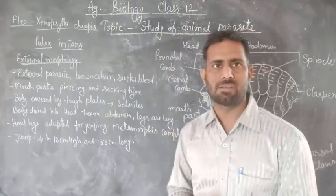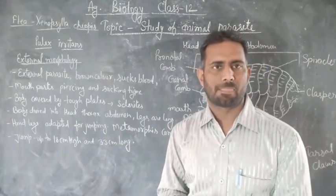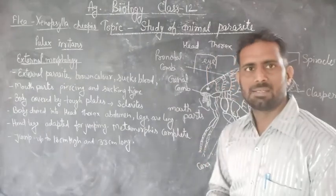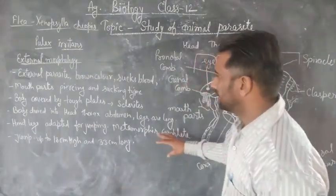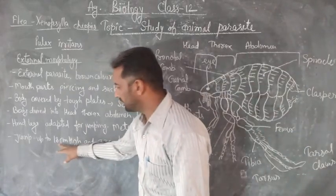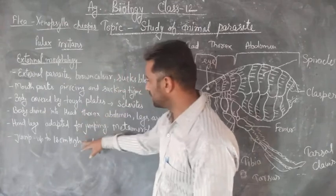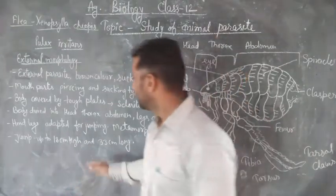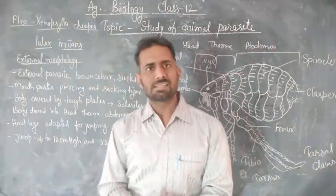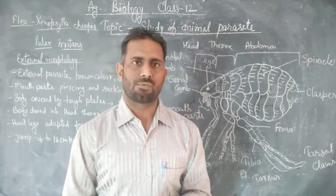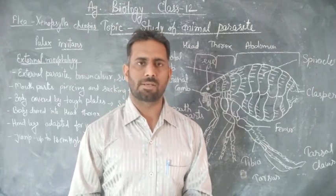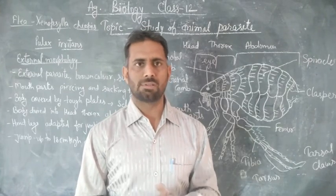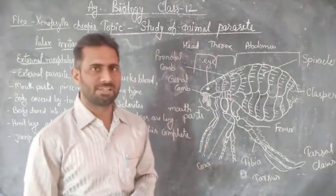The body size is approximately 3 to 5 mm, and it can jump 50 times its body size using its hind legs — up to 18 cm in height and 33 cm in length. It has complete metamorphosis with four stages: egg, larvae, pupae, and adult.